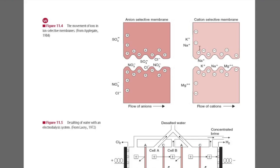To remember anode/cathode and anion/cation: in English, A is the first letter learned, and in mathematics, the first operation learned is addition — so A and plus go together. Anode is positive. Since anode attracts anions, anions must be negative. So: anode is positive, anions move toward anode and are hence negative, and whatever remains applies to cathode and cations.